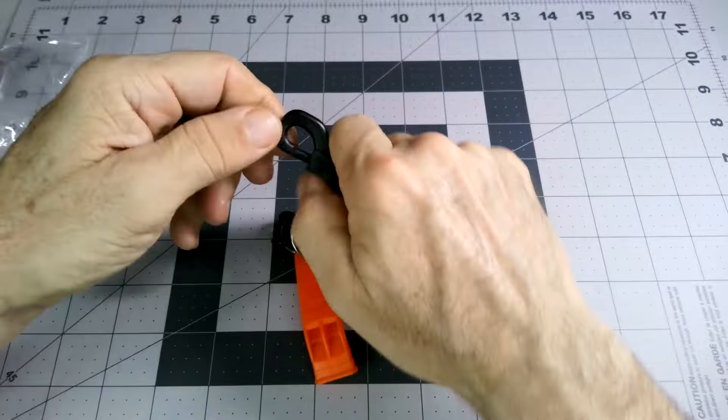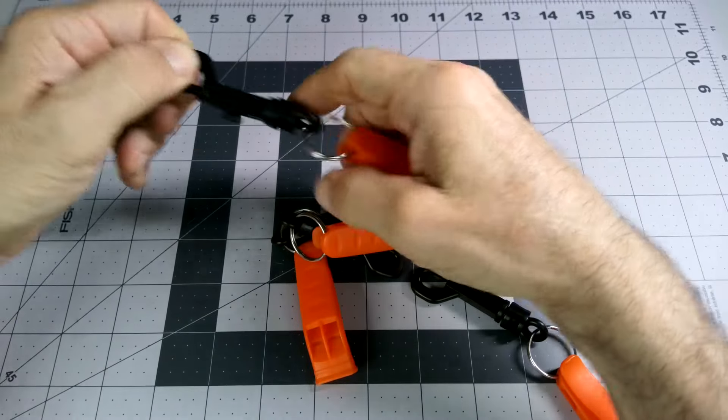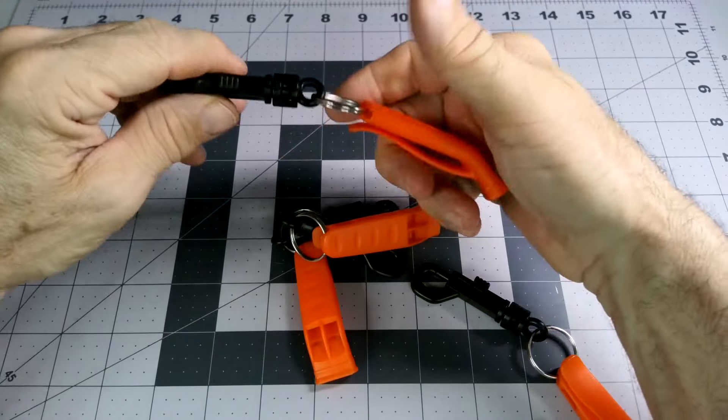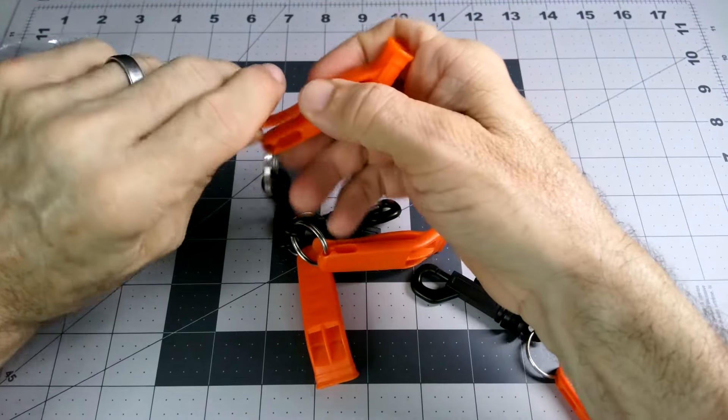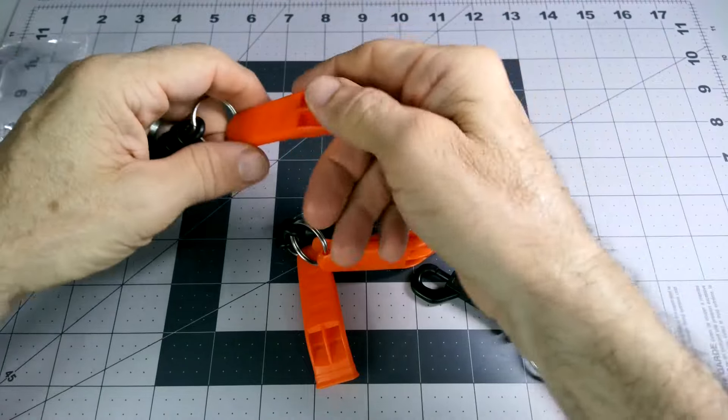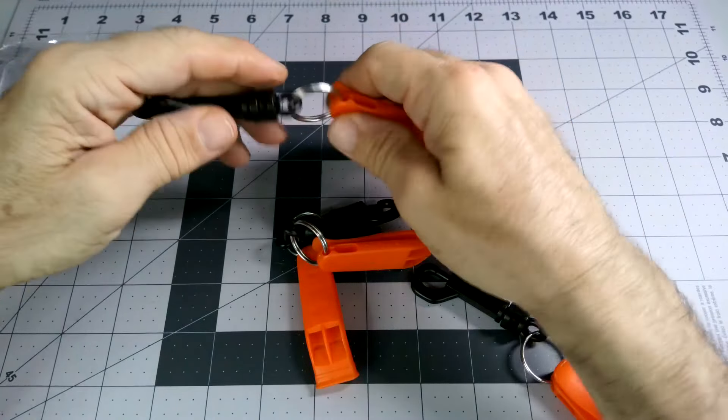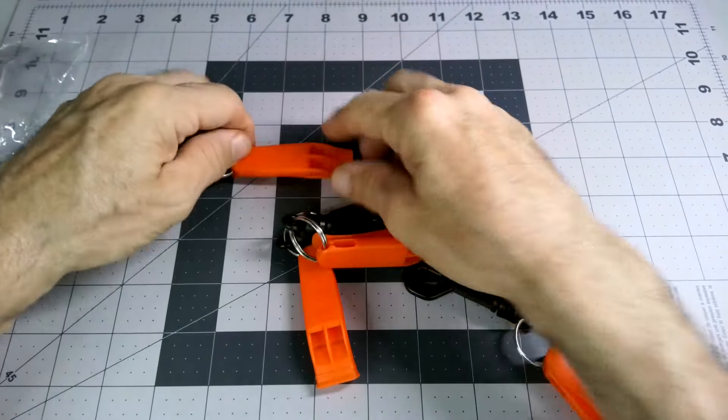It comes with a clip, not a carabiner but a snap clip kind of thing. You can probably just take this off, put it in your pocket, or it looks like a shirt clip or pant clip so you can have it accessible. Pretty small overall.